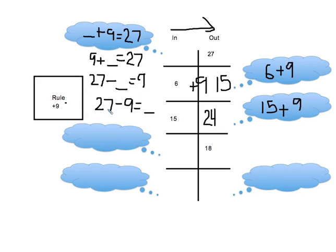This final one is the most helpful because I can start with 27, take away 9, and end up with the missing number. So if I take 27 and minus 10, that would be 17. But I only had to minus 9, so I keep 18. You can see how those fact families helped me flip this around and turn it from a plus 9 problem to a minus 9 problem.